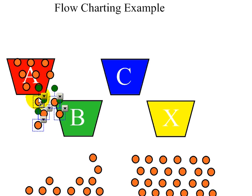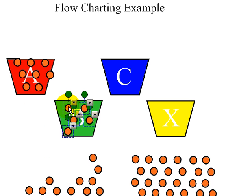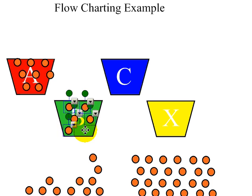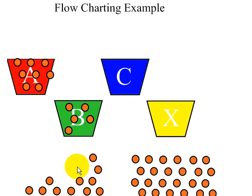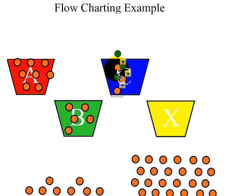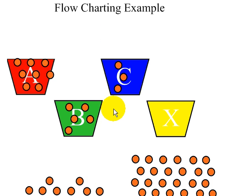Let me slide it over a little bit so we can make sure they're actually in there. So we've got 8 in A, 5 in B, and then in C I want to put 3 — 1, 2, 3 — drop them in C. And what about X? Based on our instructions to start with, X has nothing in it.